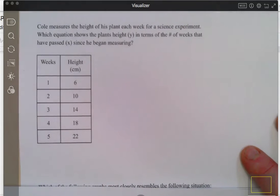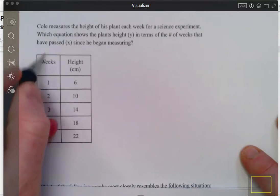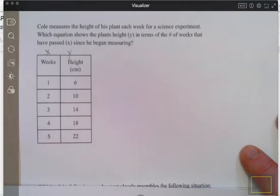Cole measures the height of his plant each week for a science experiment. Which equation shows the plant's height y in terms of the number of weeks that have passed x? This is x, this is y, since he began measuring.